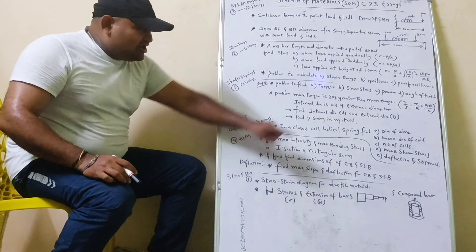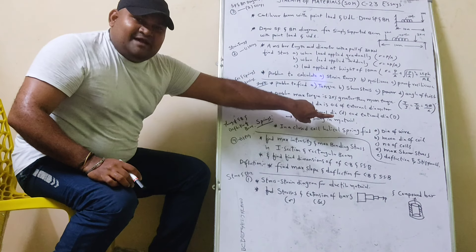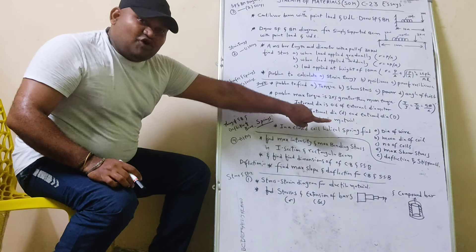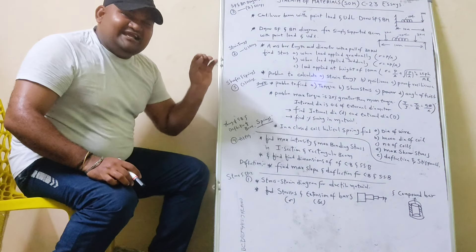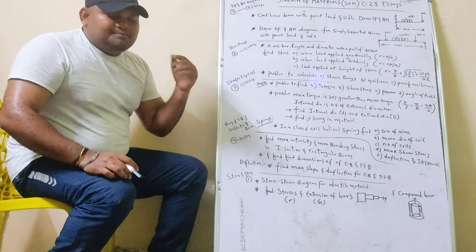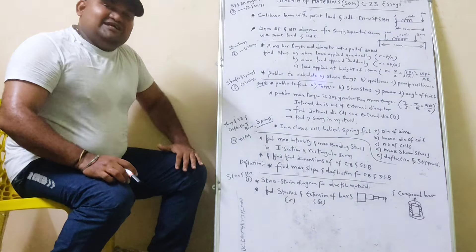You can find a diameter of wire. You can find a mean diameter of coil. You can find a number of coils. You can find maximum stresses. You can find deflection and stiffness. You can find a formula for this. Next.